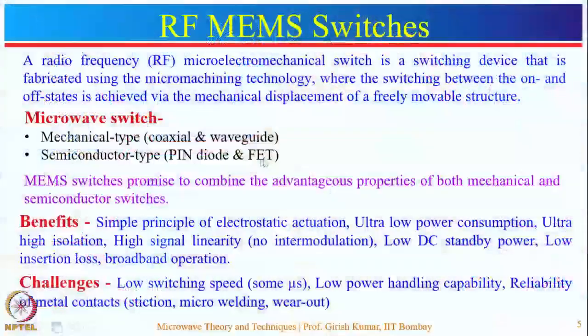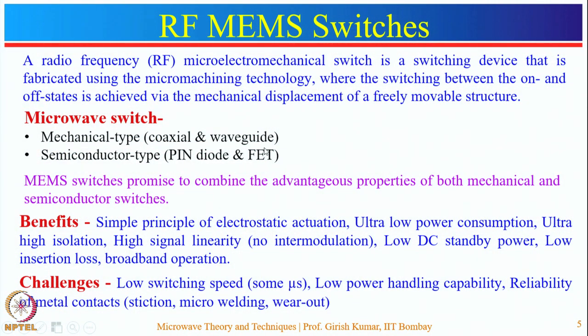These characteristics will be provided by RF-MEMS switches. There are two types of microwave switches: mechanical and semiconductor. Mechanical switches could be coaxial or waveguide type, providing low insertion loss and high RF power handling capability and high isolation when off. However, they are bulky. Semiconductor switches made using PIN diodes or FETs are relatively small, but suffer from high insertion loss and low isolation at higher frequencies. RF-MEMS switches combine the advantages of both mechanical and semiconductor switches.